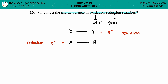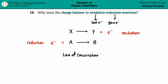Whatever amount of electrons you are giving away has to be picked up. If you are giving away three electrons, the other substance has to pick up those three electrons. This is because of the law of conservation — not of mass, but we are talking about charges here.